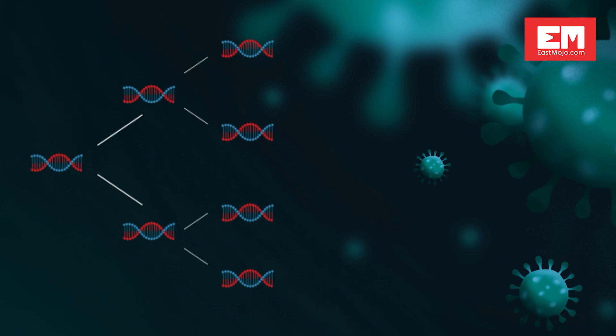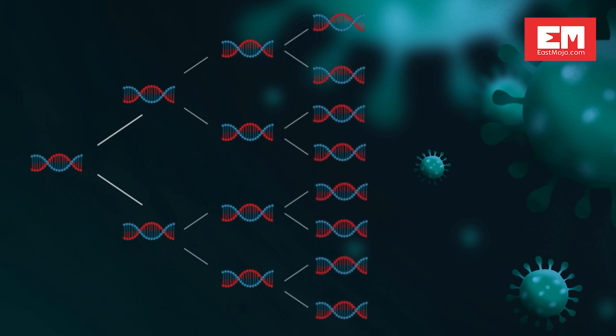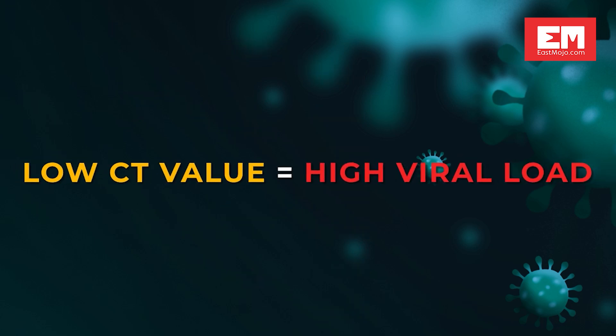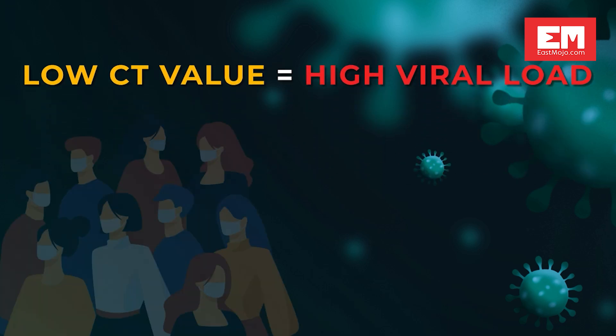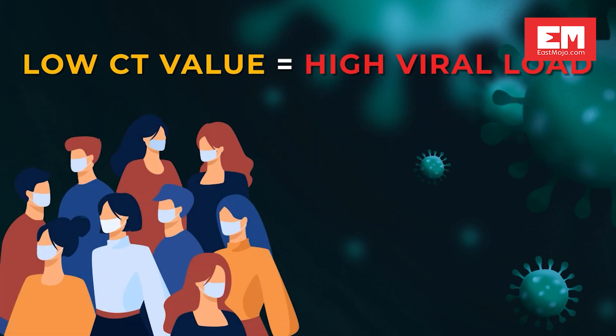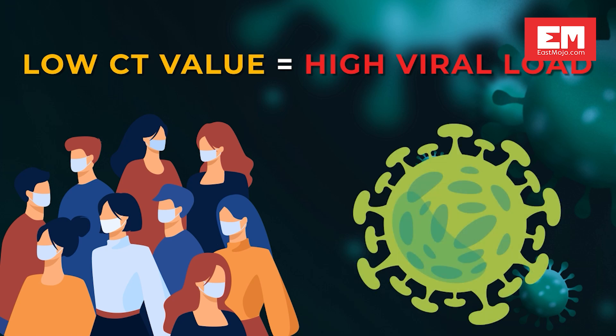If a trace of the virus is detected, it is copied again and again, cycle after cycle, to make many copies of the virus. The CT value refers to these cycles — that is, the number of cycles after which the virus is detected. If the CT value is low, the virus load is high. To put it in simple words, if the virus is detected after just a few cycles, then you have a high viral load.